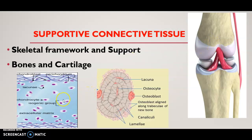This is the internal structure of the cartilage and this is the internal structure of the bone. Bone consists of many ring-like structures called lamella, and each lamella is connected by canal-like structures called canaliculi.